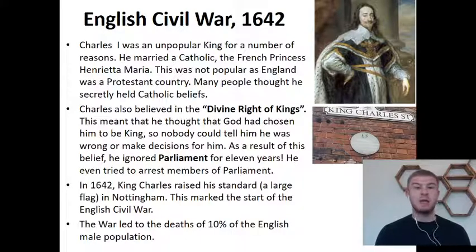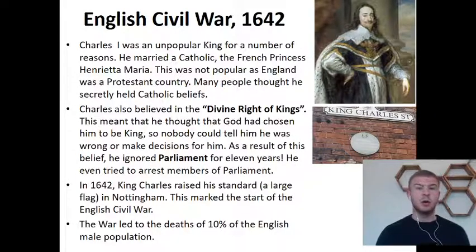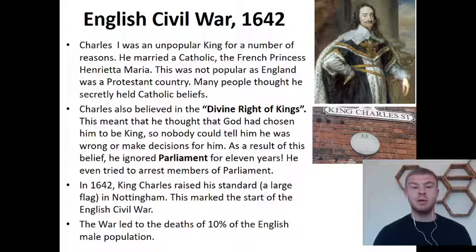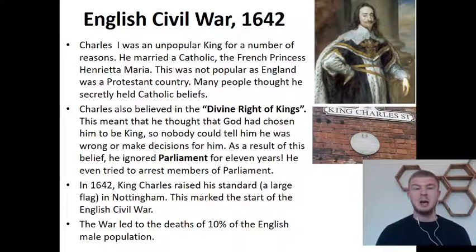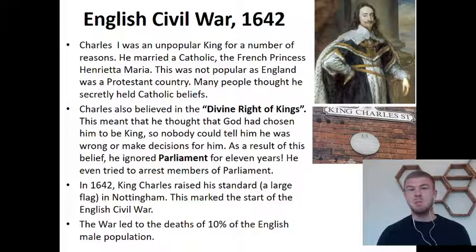Firstly, he married a Catholic. We know from this whole topic that what type of Christian you are — Catholic or Protestant — is really controversial. In Charles I marrying a French Catholic princess, Henrietta Maria, that is going to annoy a lot of people because England at this point was a Protestant country. Many people thought that because he'd married her, he secretly held Catholic beliefs. Charles also believed in the divine right of kings, so he thought God had chosen him to be king and nobody could tell him what to do. As a result, he completely ignored Parliament for 11 years, and he even tried to arrest members of Parliament.